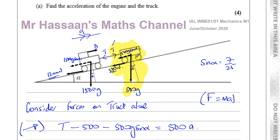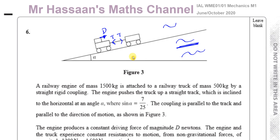As mentioned, the perpendicular-to-plane forces don't need to be considered because they only affect friction, and we already know all resistance forces given in the question. There's no need to find perpendicular components of weight since perpendicular forces have no effect on motion parallel to the plane. Other connected particles questions are in the playlist, and other M1 paper solutions are also available. Thank you for watching and see you soon.